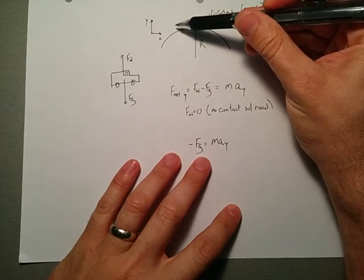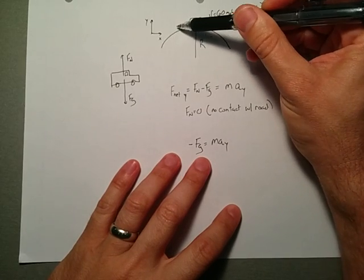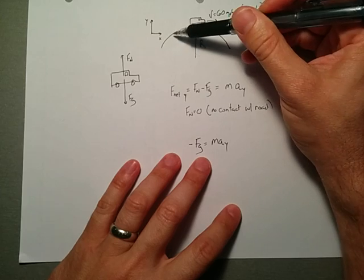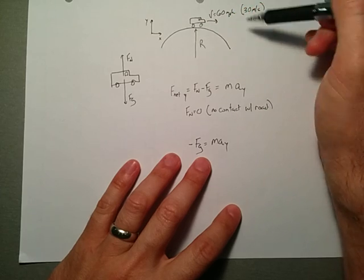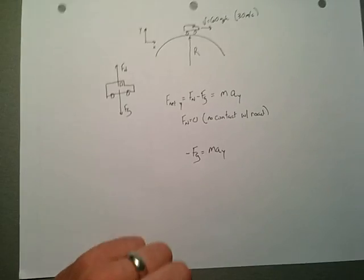In this case, the car, as it's going over this circular thing, is always being accelerated towards the center. It's constantly being accelerated towards the radius. That is what circular motion is all about.